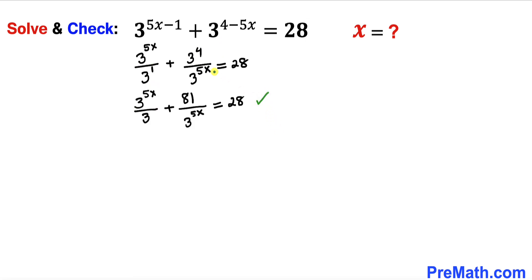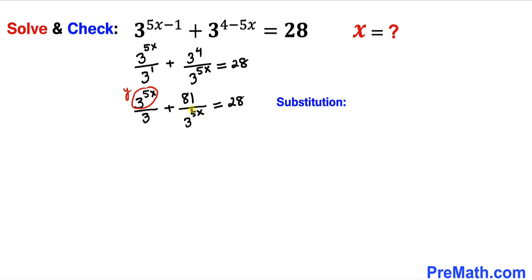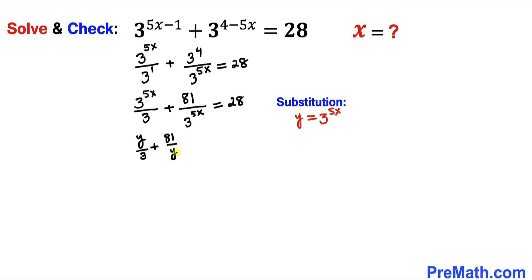I have replaced 3^4 with 81 and 3^1 with 3. Now, to make our job simpler, let's make a substitution: let y = 3^(5x). So our equation becomes y/3 + 81/y = 28.